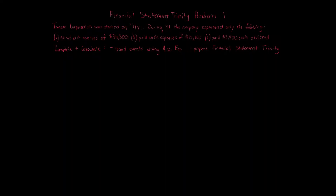Financial statement trinity, problem one. Tomato Corporation was started on January 1, year one. During year one, the company experienced only the following: earned cash revenues of $34,300, paid cash expenses of $15,100, and paid a $3,400 cash dividend. We need to record events using the accounting equation and prepare the financial statement trinity.